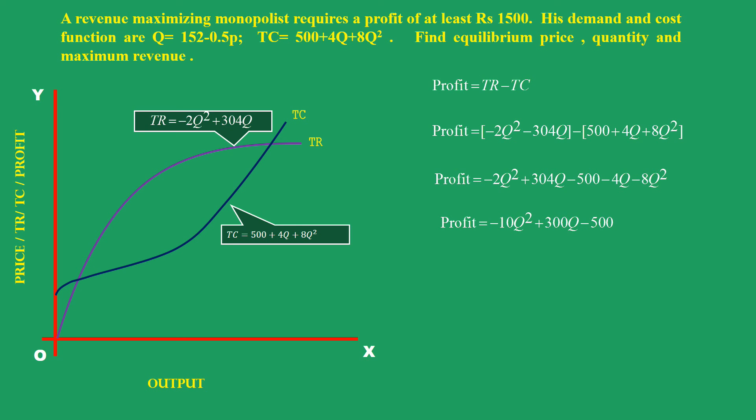We know minimum profit expected is 1500 rupees. Then the equation becomes 1500 = -10q² + 300q - 500. On simplifying, we get a quadratic equation.